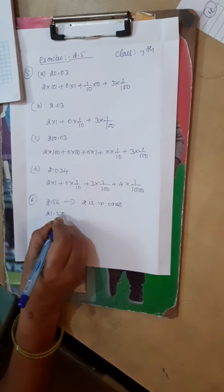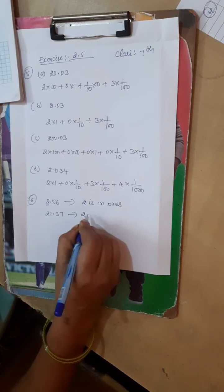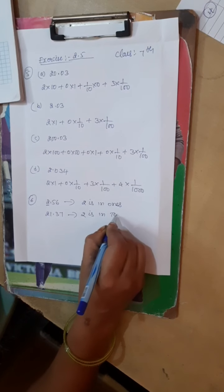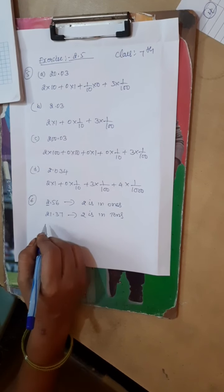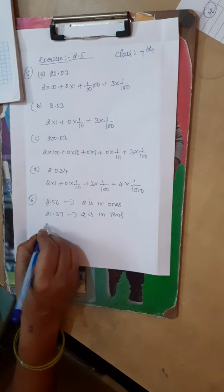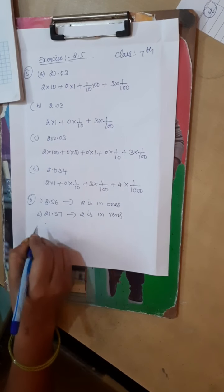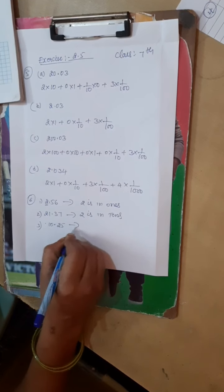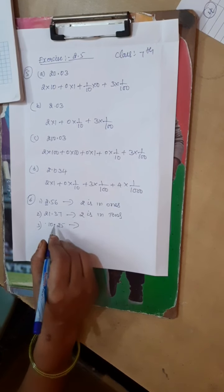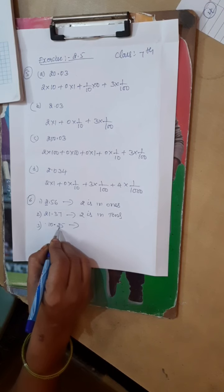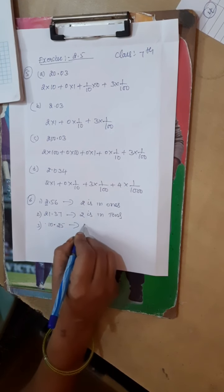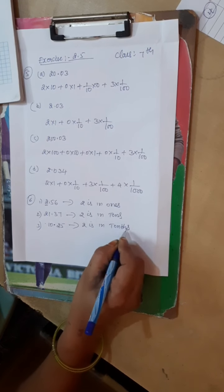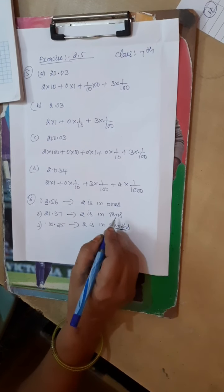Next, second one 21.37. 2 is in tens. Next, third question. First one, second one, third one. 10.25. So decimal point on the right side, so it is tenths, hundredths. It is tenths. So 2 is in tenths, T-E-N-T-H-S. So it is important, tenths.